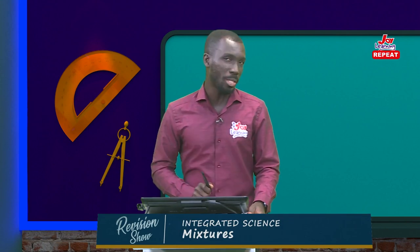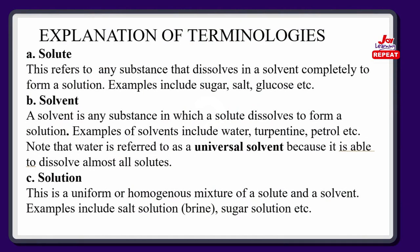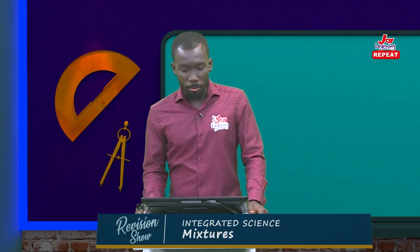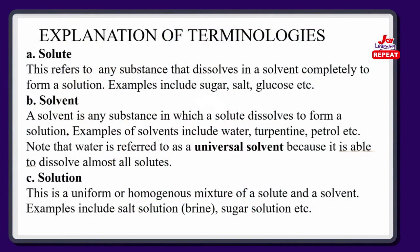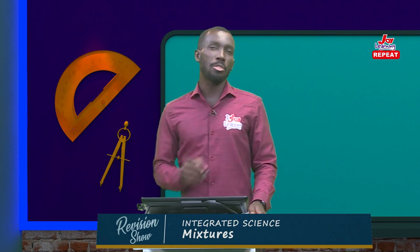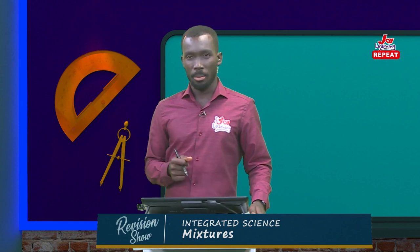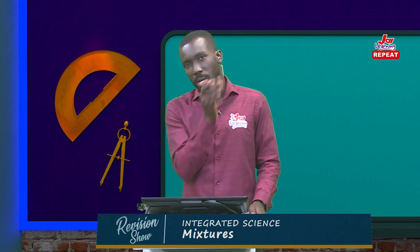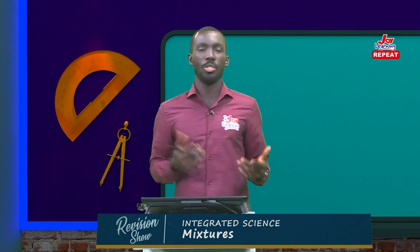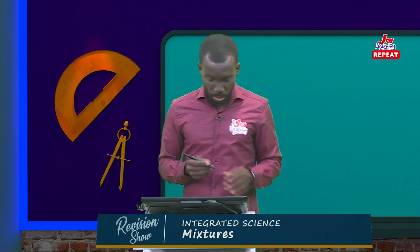We should always note that water is always referred to as a universal solvent, because water is able to dissolve almost all solutes. Water can dissolve salt, glucose, sugar, and even some other substances. Now, what is a solution? A solution is a uniform or homogeneous mixture of a solute and a solvent. The uniformity tells you that there is no clear distinction between the solute particles and the solvent particles. For example, if you dissolve sugar in water completely, you cannot tell the sugar from the water — it has formed a homogeneous mixture.